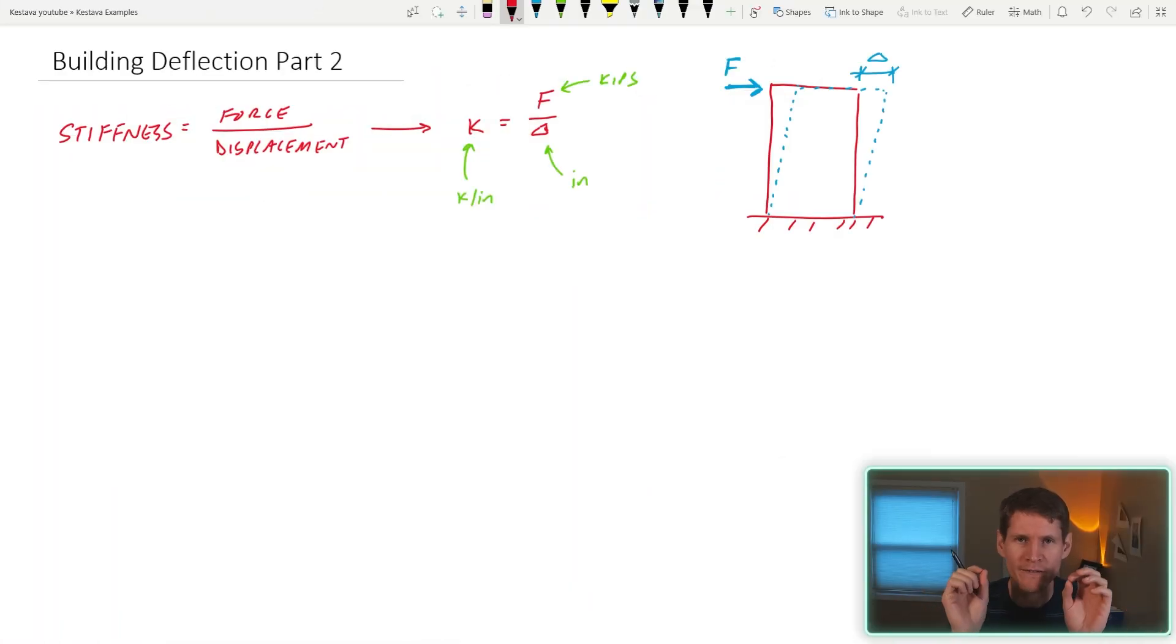Let's get into it. This is just the very tippy-top little tiny basics from our last video. Stiffness equals force over some displacement, and how that translates to a structure is you have a force, a lateral force, either seismic or wind, pushing on your structure, displacing it some amount. This can be called drift as well, building drift.